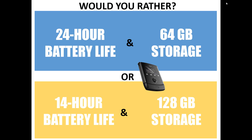Most people want as much battery life as possible and as much onboard storage as possible, but for marketers we probably can't offer that superior option at a price point they'll tolerate. So there has to be some sort of trade-off. It behooves marketers to figure out, in the face of trade-offs, what do consumers most prefer. That's the essence of conjoint analysis.